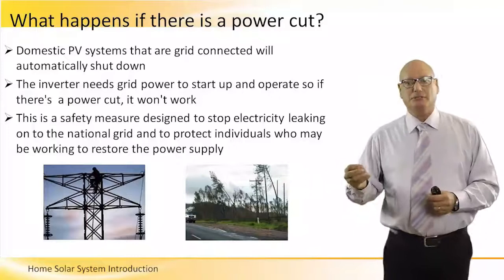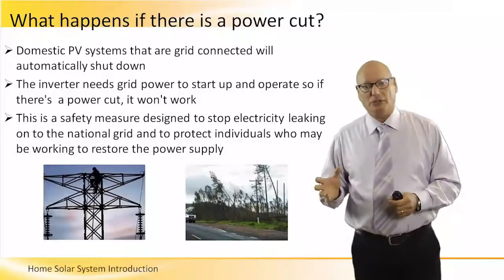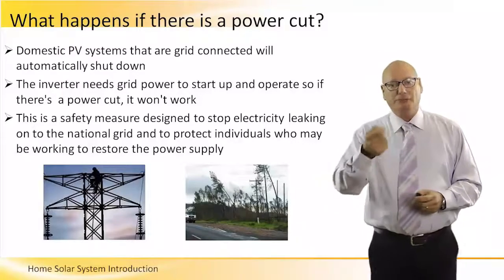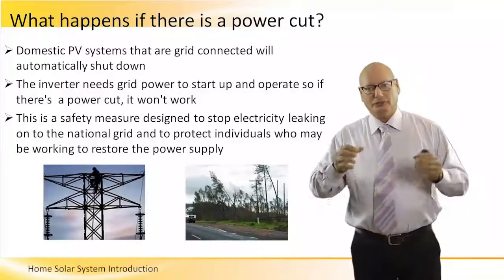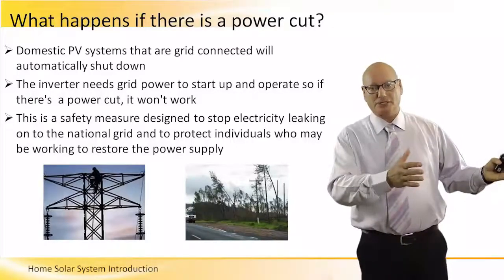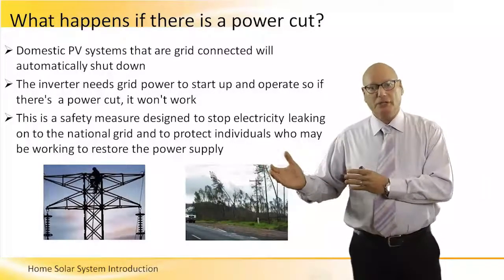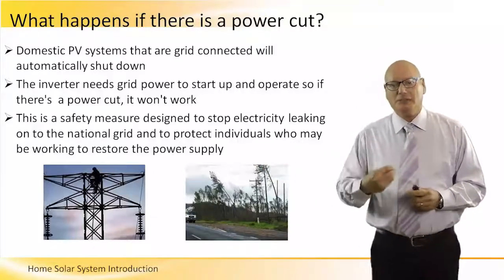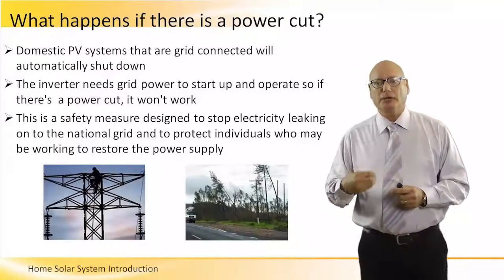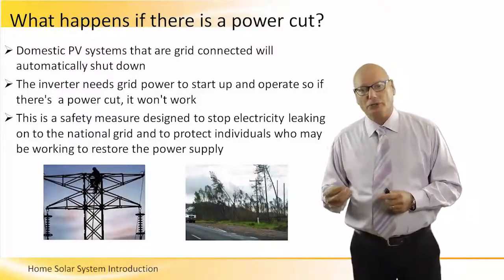Domestic PV systems that are grid-connected will automatically shut down. The way it is done is that the inverter itself — this component that converts DC input from the cells to AC going out to the grid — needs grid power to start up and operate. So if there is a power cut, it will not work.